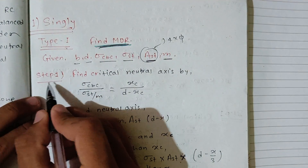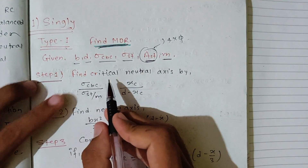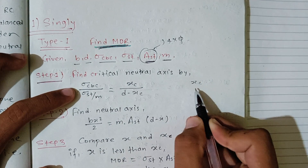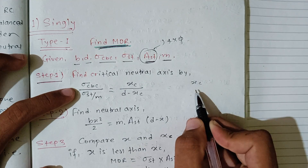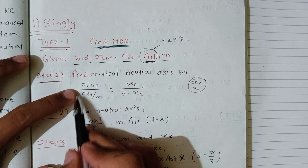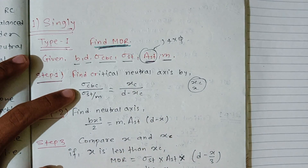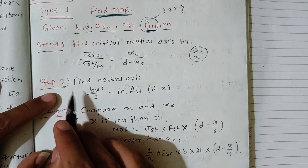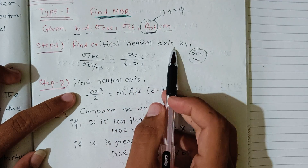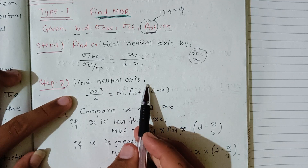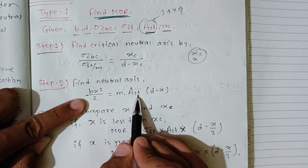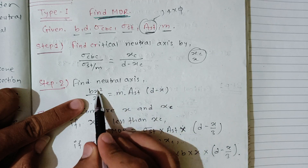Step 1: Find the critical neutral axis xc. Step 2: Find the actual neutral axis x using the formula bx squared by 2 equals m times Ast times (d minus x). Solve to find x.